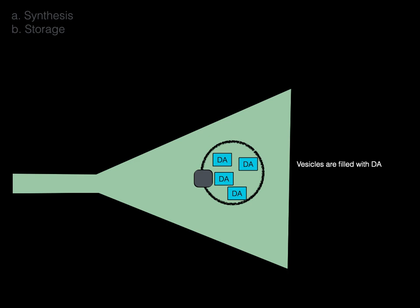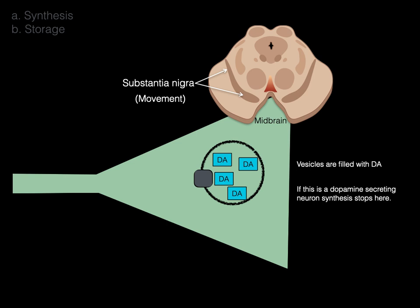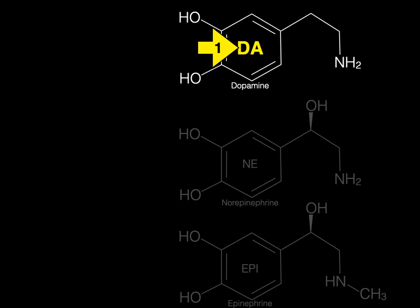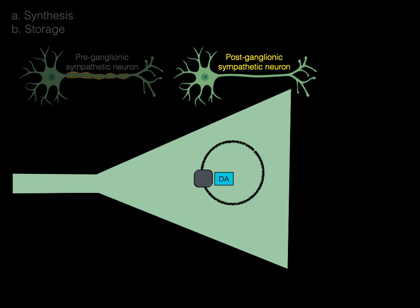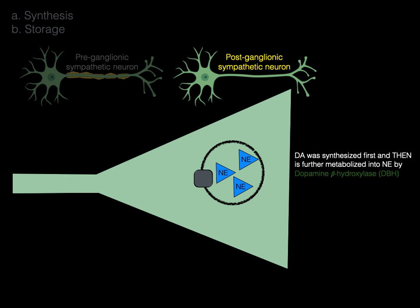If this is a dopamine-secreting neuron, synthesis stops here. For example, in the midbrain substantia nigra, which is responsible for movement, many neurons are dopamine-secreting. If those neurons are diseased and don't work properly, you have movement problems such as Parkinson's. Now, from dopamine let's make norepinephrine. This occurs primarily in postganglionic sympathetic neurons, where dopamine is further metabolized into norepinephrine by dopamine-beta-hydroxylase, or DBH. The vesicles then store and release norepinephrine into the synaptic cleft.